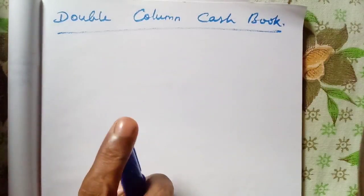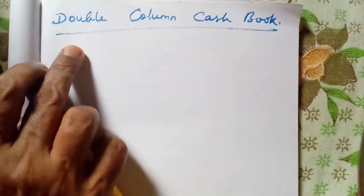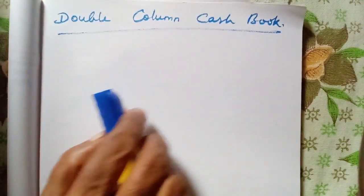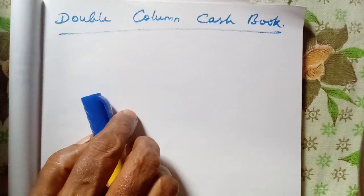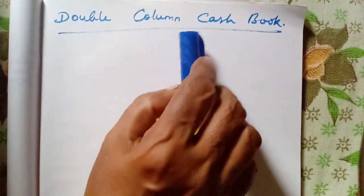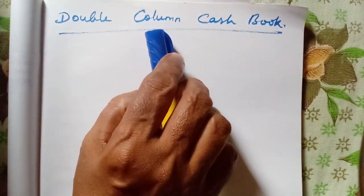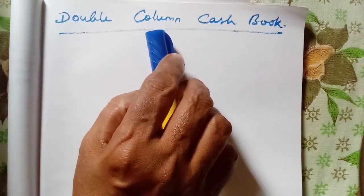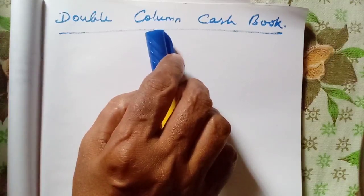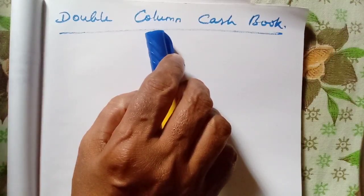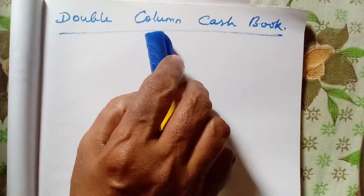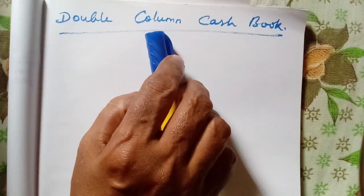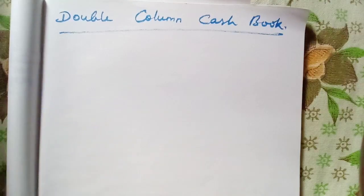In accountancy, we were learning the theory portion of the double column cash book. The double column cash book has a cash amount column and one more amount column as the discount column. On the debit side there is a column for discount allowed, and on the credit side, the discount received. Once we make payment, we will get discount received. When we receive cash, we have to allow discount.